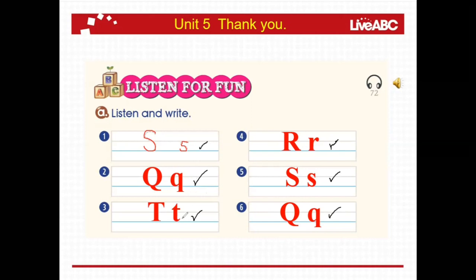Okay. Number three, letter T is for tiger. Tiger, repeat: tiger. Tiger. Number four, letter R, repeat: rat. Rat. Okay. Number five: snake. Snake. Number six: queen. Queen. Okay.